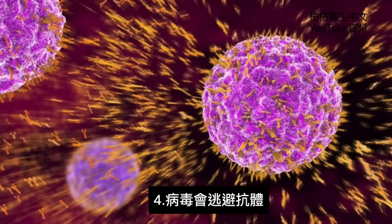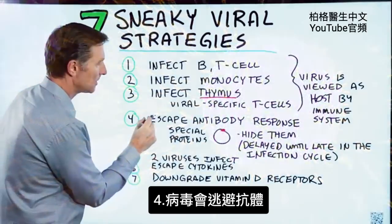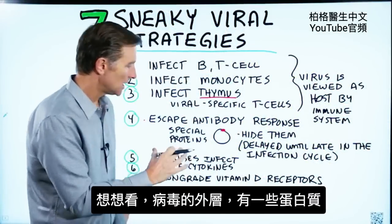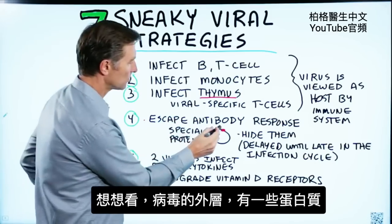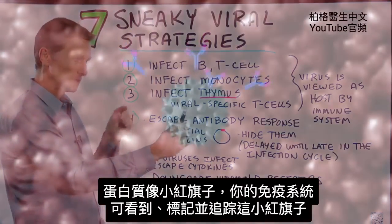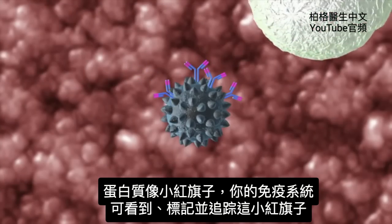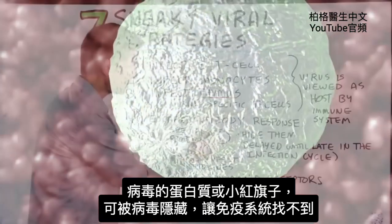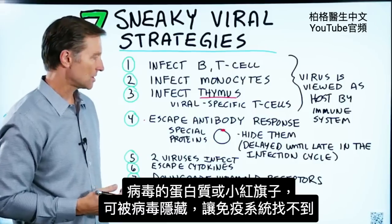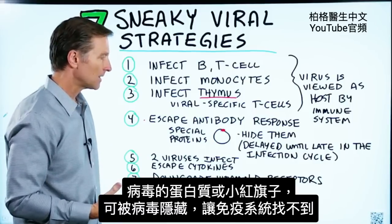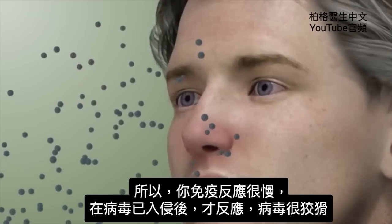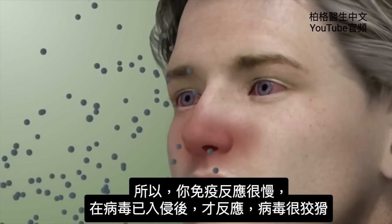Number four: viruses have the ability to escape antibody response. The shell of a virus has a little protein on it — like a little flag that your immune system can see, tag, and go after. Well, these little proteins or flags can be hidden by the virus, so your immune system cannot find them. This causes a delayed immune response until after the infection has set in. Very, very sneaky.